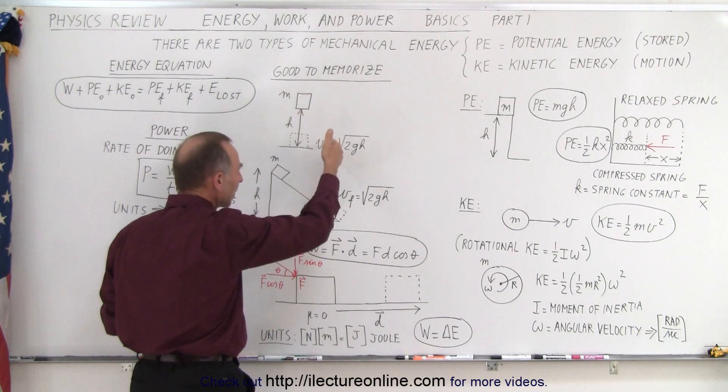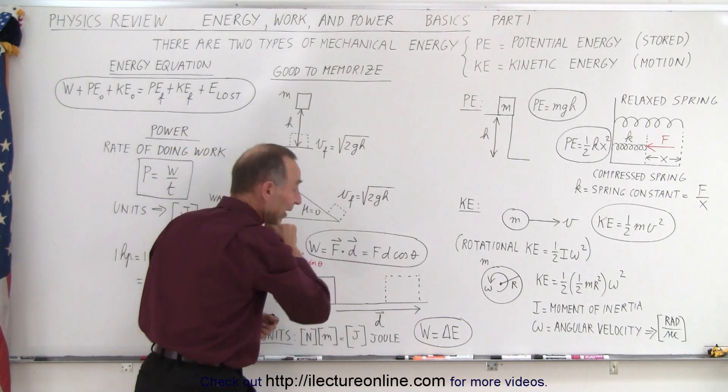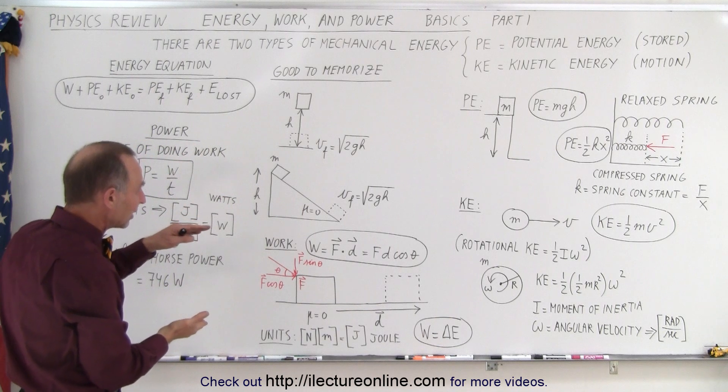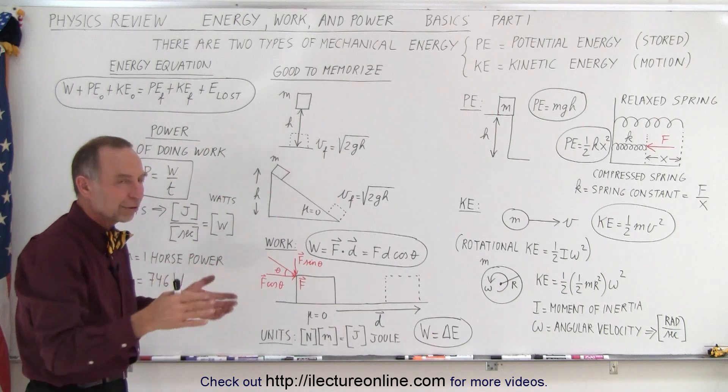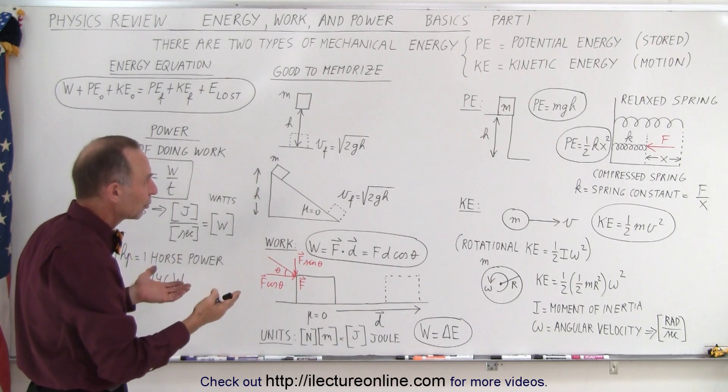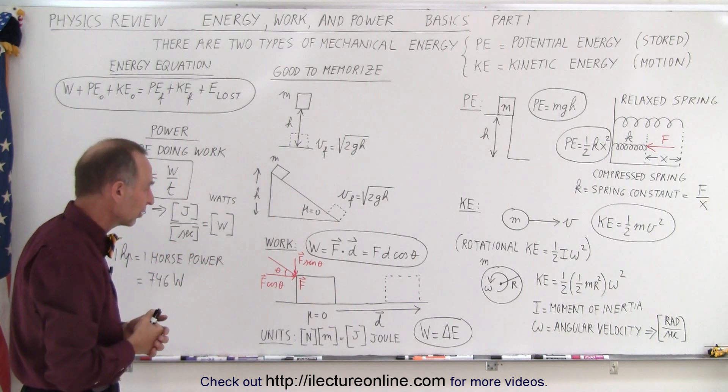So it doesn't matter if you drop an object or slide it down, provided there's no friction, the velocity after a height difference will always be the square root of 2gh. Of course, there's all kinds of other situations where it will not be equal to 2gh because of energy loss and other things.